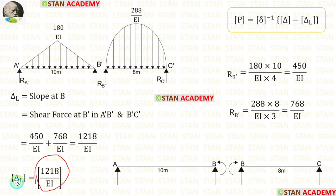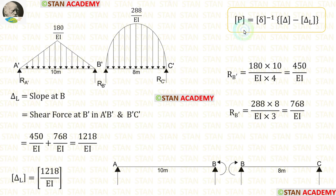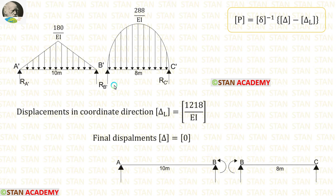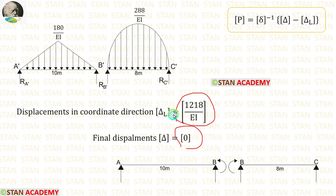In the delta L matrix, we are having only one value because we are having only one coordinate. Now let us calculate the delta matrix. If in the beam there is overhanging, we have to calculate the delta matrix; otherwise, we can simply enter 0. In the given beam, there is no overhanging, so let us apply 0. The size of the delta matrix will be similar to the size of the delta L matrix — here we are having only one value, so in the delta matrix also we will have only one value, because our coordinate is only 1.